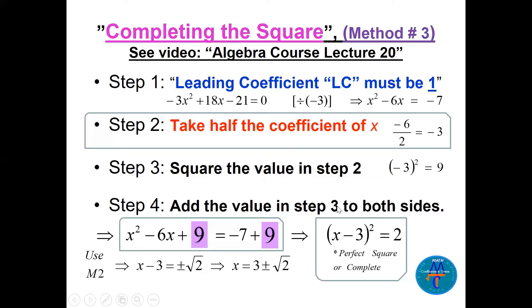Here's an example: minus 3x squared plus 18x minus 21 equals zero. We convert this to a nice form. First, divide the whole equation by minus 3 so the leading coefficient becomes 1. If the coefficient were 7 you'd divide by 7; if it were one-half you'd multiply by 2. We get x squared minus 6x equals 7 after moving the constant to the other side.